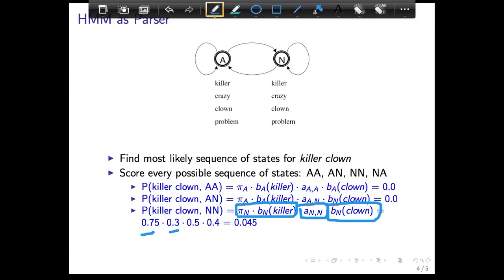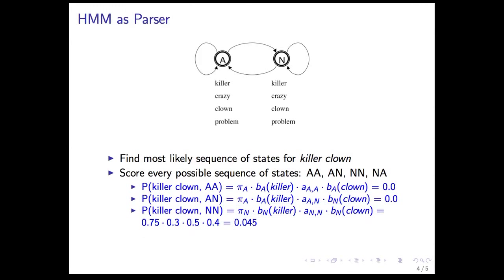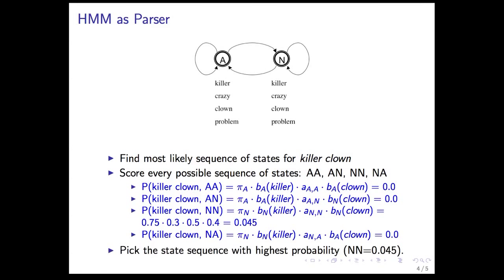And those, you can just look up in the table, and you get these probabilities multiplied together. And that's the probability of killer clown as a noun noun. And finally, the last sequence is N, A, and this one is also getting a probability of zero, because clown cannot be an adjective, has to be a noun. So that gets a probability of zero. So if you look at the sequence with the highest probability, it has to be NN, and everything else is zero. This is the only non-zero probability.